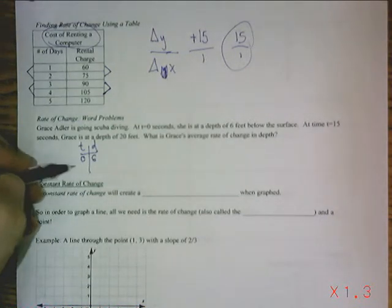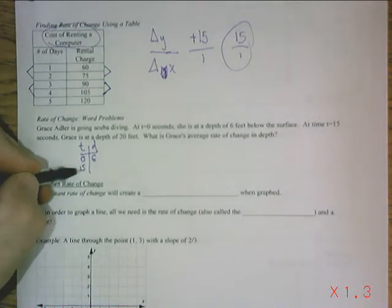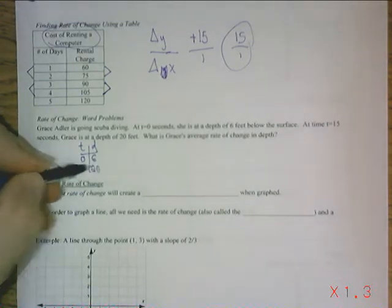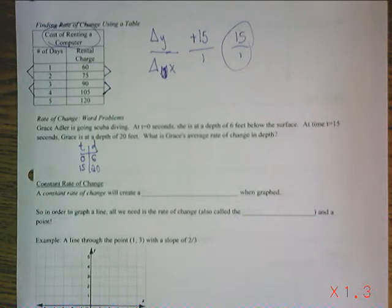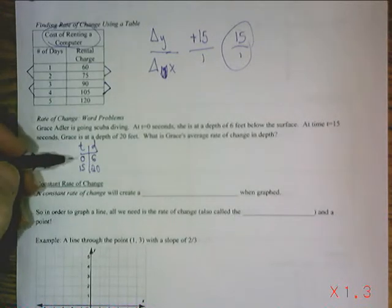At time T equals 15, so 15 seconds later, she's 20 feet in the water. We have to find her average rate of change in depth. So how fast or how deep she's going based on time.